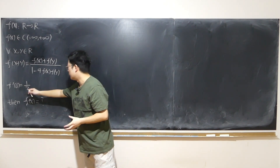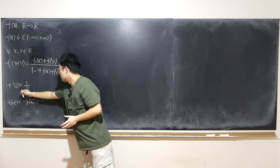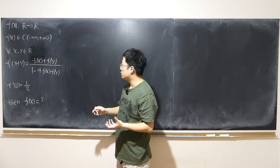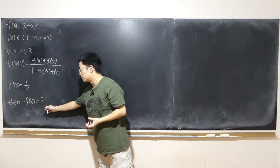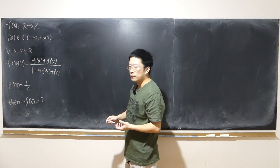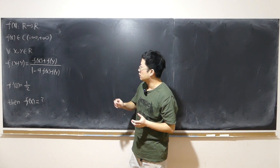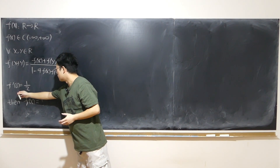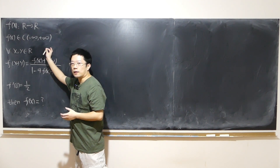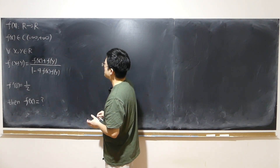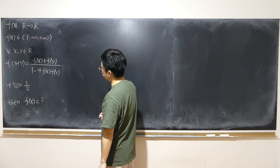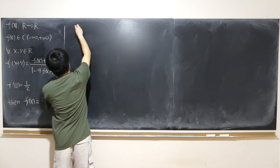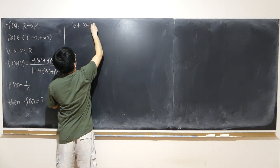The fact that we're given a derivative at a certain point motivates us to maybe set up some differential equations to find out the explicit form of f. But to set up a differential equation, we need to find out if the function is differentiable not only at 0, but over the entire number line. It's already continuous, so what if we use some special values — for example, let x equal to y equal to 0.